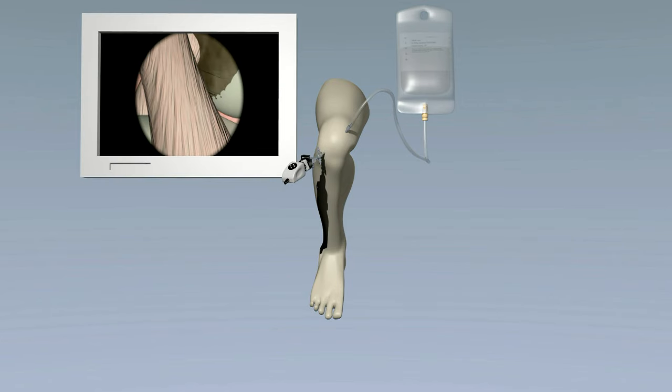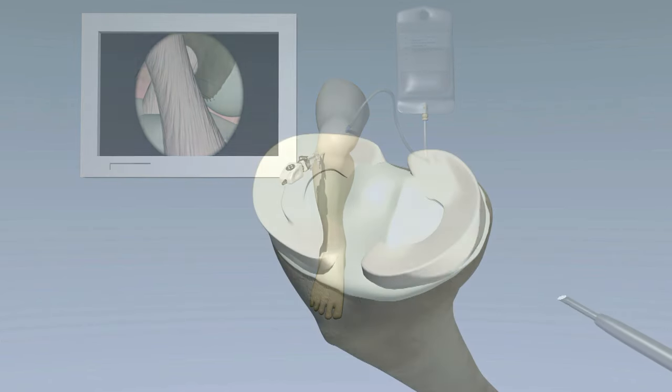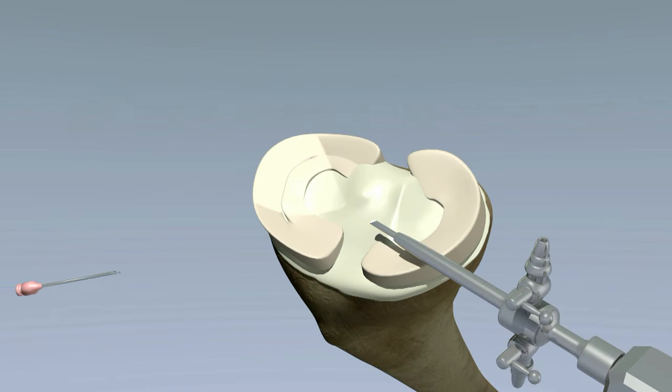Once the sterile water is flowing into the knee and the tear is well visualized with the camera, special instruments are used to pass suturing thread into the joint. The special instruments are then used to sew up the torn part of the meniscus.